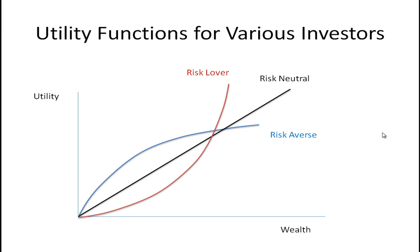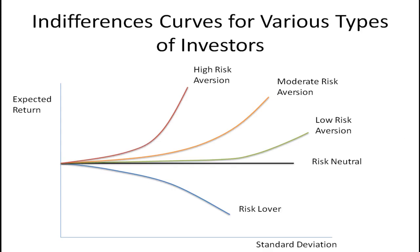What I want to do is plot these three utility functions in a different type of space so that we can look at the indifference curves. You may recall from microeconomics that an indifference curve shows the trade-off between two goods that give you the same level of satisfaction. Now, these are not the shapes of the indifference curves you saw in microeconomics, because here we're plotting in risk-return space.